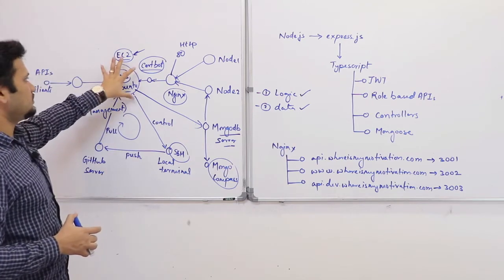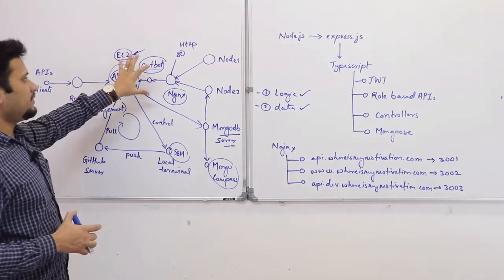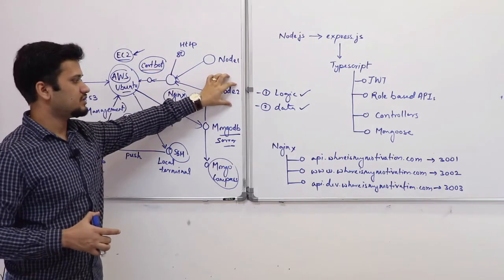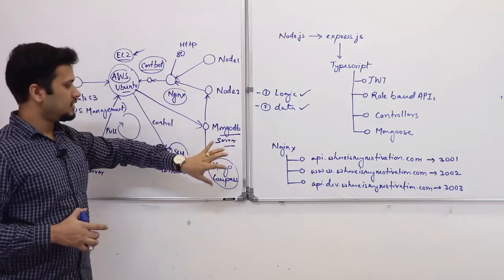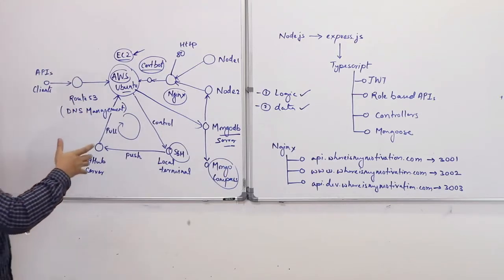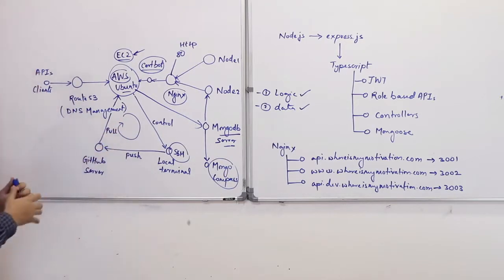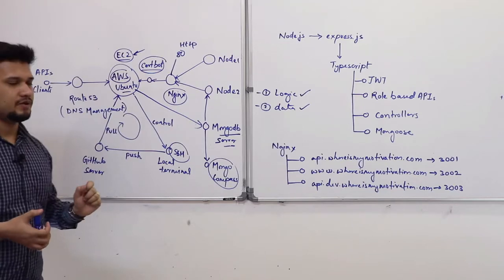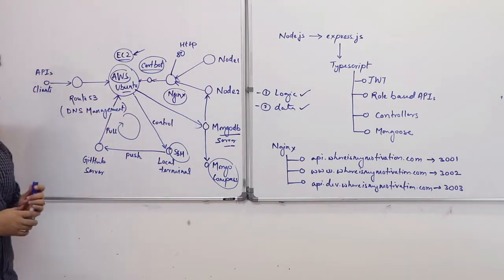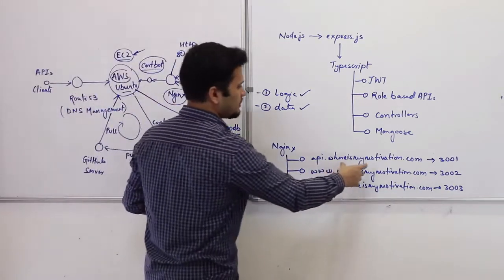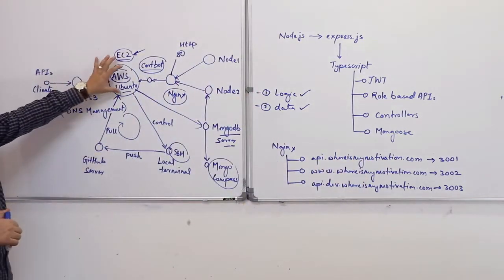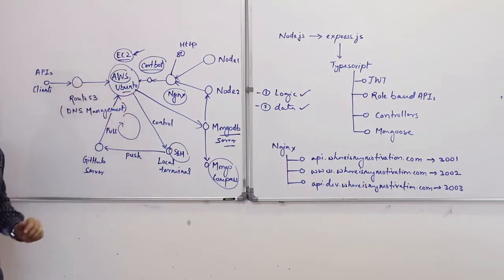So, first is your machine, and then you have got your proxy server, your server, and your database, and you connect with the database. Now, we have to think about the client. Your client is your Android application, your iOS application, web apps. Now the client has to connect to this machine. You will have some domain name. For example, I have got wheresmymotivation. So, this domain name will be mapped to the IP address of this machine.